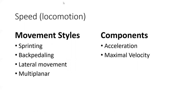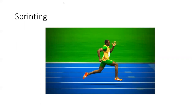Then we have two different components within each of those: acceleration and maximum velocity. Acceleration is our ability to change our velocity, and maximum velocity is as fast as we can possibly move. Acceleration components are more often seen in most, especially smaller court or field sports. We rarely see maximal velocity running in court or field sports, except for sports like soccer or rugby where you have time and space to move up to maximum velocity. But most sports are played within the acceleration component. Track does have maximum velocity, where we're moving as fast as we can linearly.